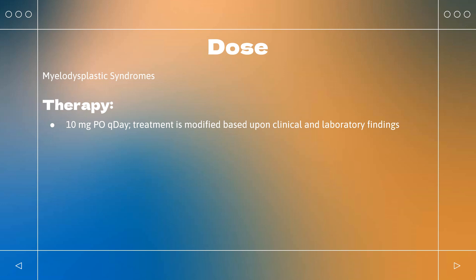Follicular lymphoma or marginal zone lymphoma: Treated in combination with a rituximab product for patients with previously treated follicular lymphoma (FL) or marginal zone lymphoma (MZL). Rituximab 375 mg/m² once weekly in cycle 1 (days 1, 8, 15, and 22), then on day 1 of each 28-day cycle from cycles 2–5. Lenalidomide 20 mg orally once daily on days 1–21 every 28 days for up to 12 cycles. Refer to prescribing information for rituximab for dosing.